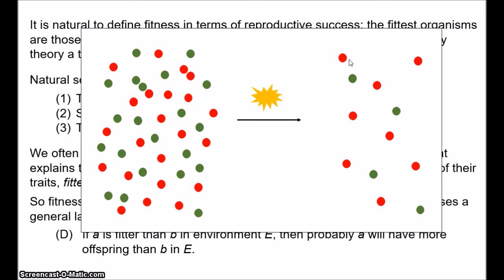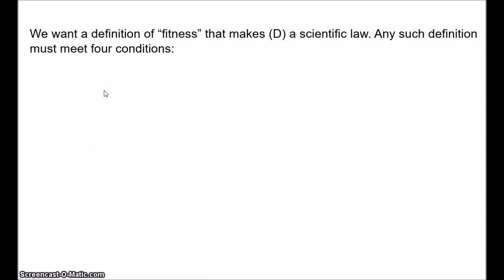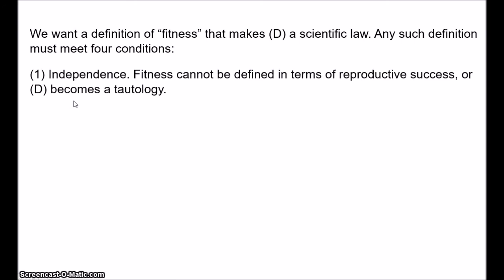So any definition of fitness has to allow us to attribute evolutionary change to processes other than selection, because selection is statistical — we're not saying that fitter organisms will always produce more offspring. What we want is a definition of fitness that makes D a respectable scientific law. Brandon suggests this imposes four constraints on any acceptable definition. Fitness can't be defined in terms of reproductive success, because this would make D a tautology. The property of fitness is something that causes reproductive success — it can explain reproductive success.